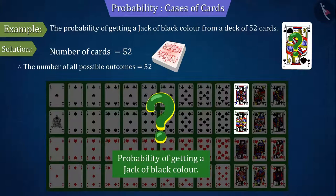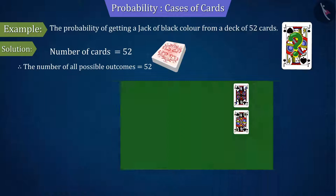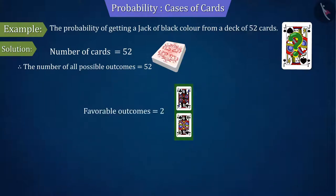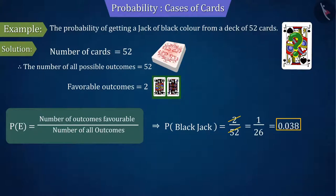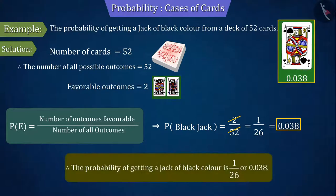Since we have to find the probability of getting a jack of black colour, the number of favourable outcomes of the event will be 2. By substituting the values of all possible outcomes and favourable outcomes in the probability formula, we get 1/26 or 0.038. Therefore, the probability of getting a jack of black colour is 1/26 or 0.038.